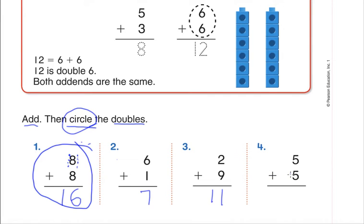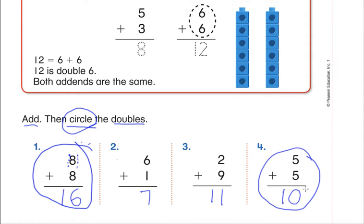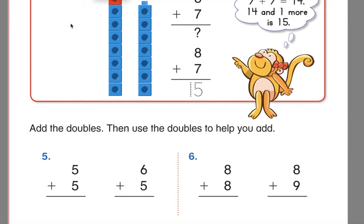Let's look at number four: five plus five. Some of us already memorized that one, and five plus five is ten. Is five and five a doubles fact? It sure is, so make sure you circle that one. Now I'm going to get the next page up. The next page has two blue towers but one has a red block on top, and you'll see a number sentence next to it and problem number five at the bottom.